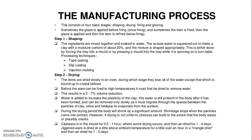Shrinkage stops when the particles come into contact. However, if drying is not uniform, stresses can build to the extent that the body warps or possible cracks will develop. Cast ware is kept in the mold for 30 to 60 minutes where some drying occurs, and then air dried for 1 to 4 days.